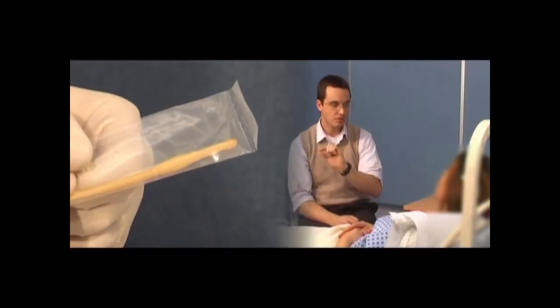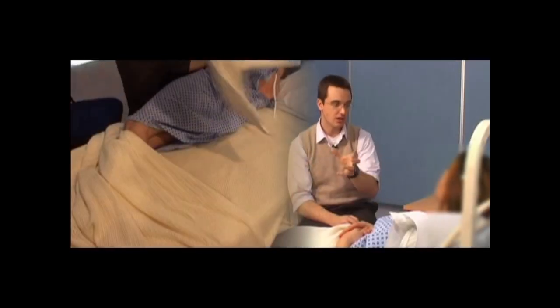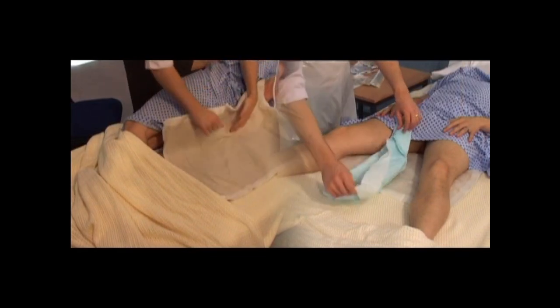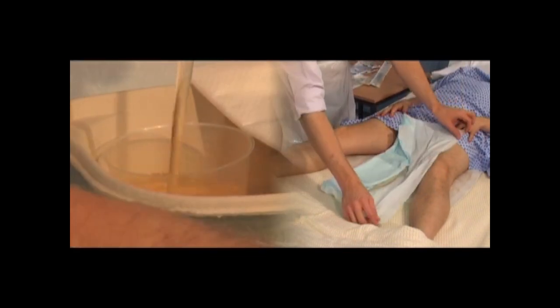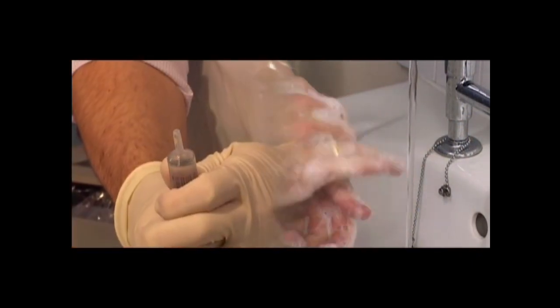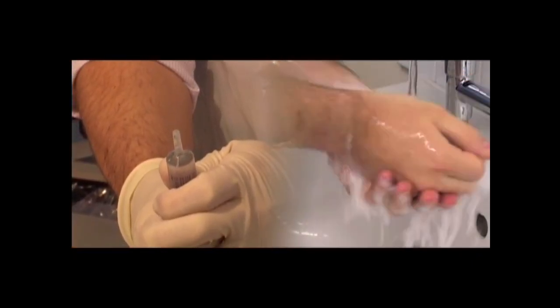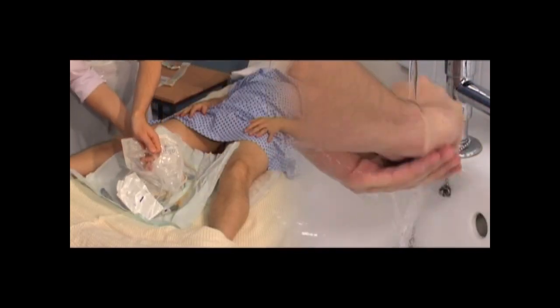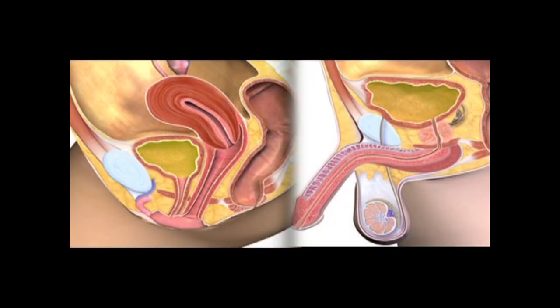Urinary catheterisation is a procedure that is widely performed by healthcare workers. Currently, around one in four hospital inpatients, both male and female, will require urinary catheterisation. This DVD will explain the anatomy of the urinary tract in relation to the procedure of transurethral bladder catheterisation.